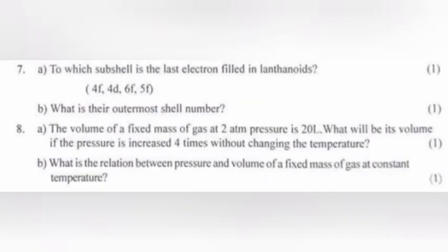Question 7a: To which subshell is the last electron filled in lanthanoids? Answer: 4F. Question 7b: What is their outermost shell number? Answer: 6.